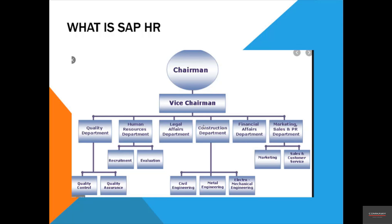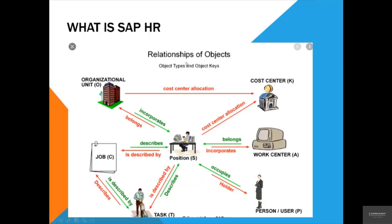Now the relationships of objects are very important. A position in a company is permanent, while a person or employee ID is temporary. For example, if Jack holds a manager position and Jack leaves the company, his employee number also leaves, but the manager position remains and can be held by another person like James.